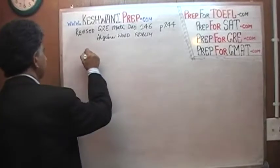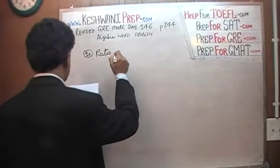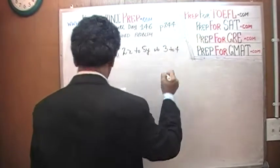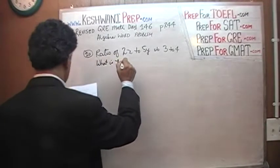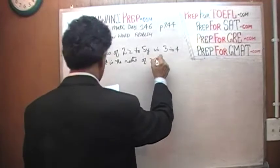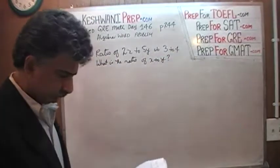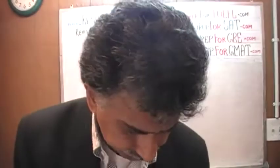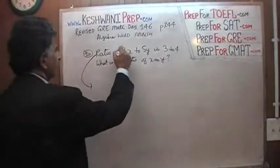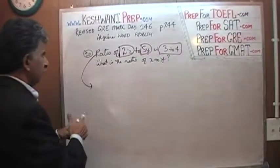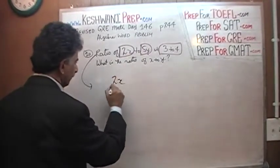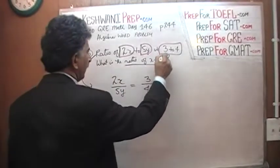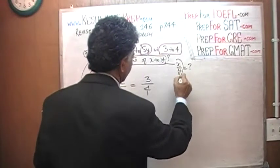We are told that the ratio of 2x to 5y is 3 to 4. The question is: what is the ratio of x to y? So the ratio of 2x to 5y is 3 to 4. What they are asking is the ratio of x to y — they are looking for the fraction x over y.